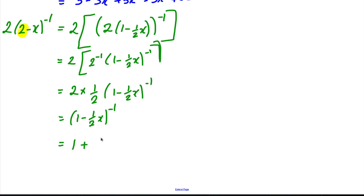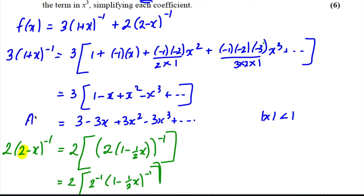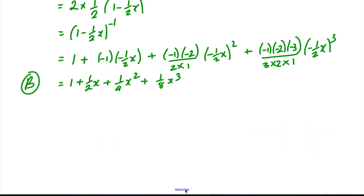So I could write this as 1 plus minus 1 times minus 1 half x plus minus 1 times minus 2 over 2 times 1 minus 1 half x squared plus minus 1 times minus 2 times minus 3 over 3 times 2 times 1 minus 1 half x cubed. Tidying this up is going to be 1 plus 1 half x, and this here is going to turn out to be plus 1 quarter x squared, and this here is going to turn out to be plus 1 eighth x cubed. So this I can call my b. Up here I can call that my a. And to get the final result for f of x I add them. So I'm going to work out a plus b.